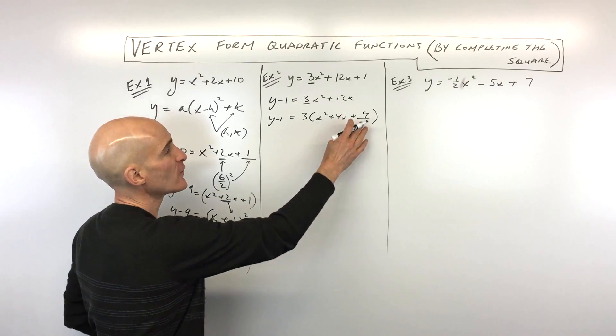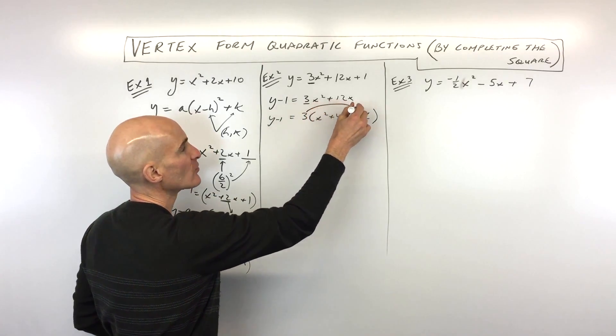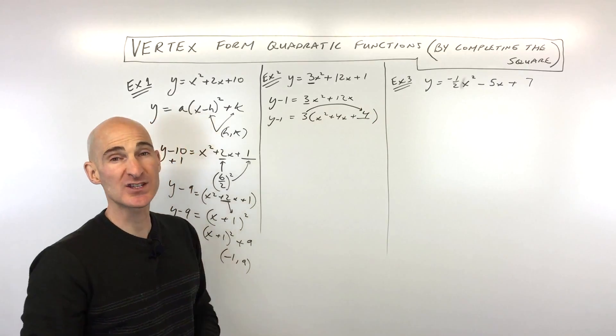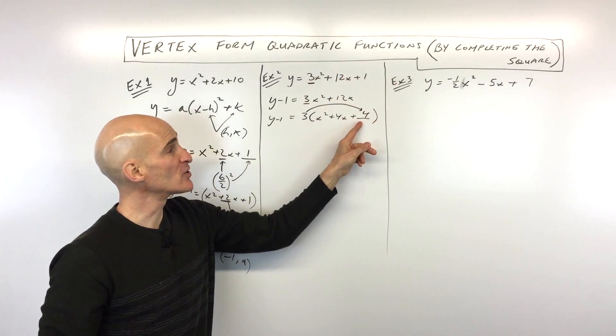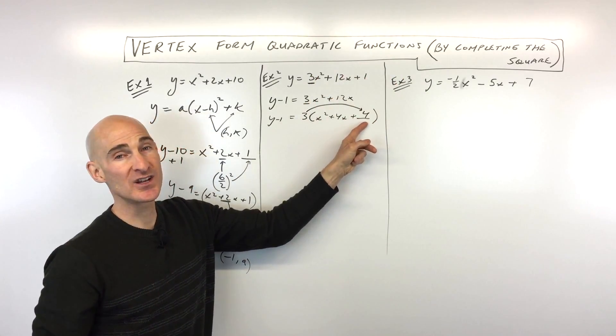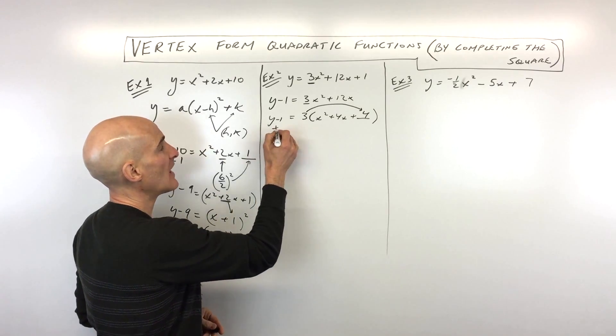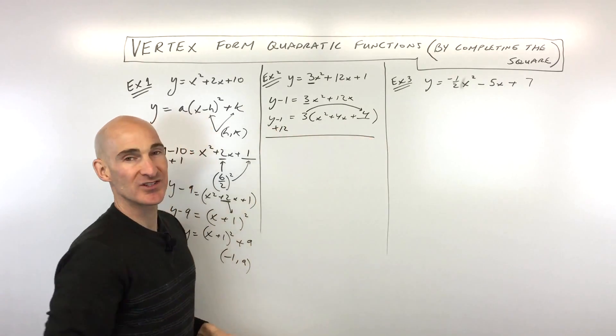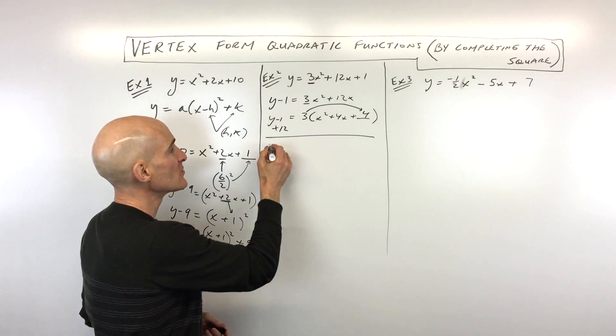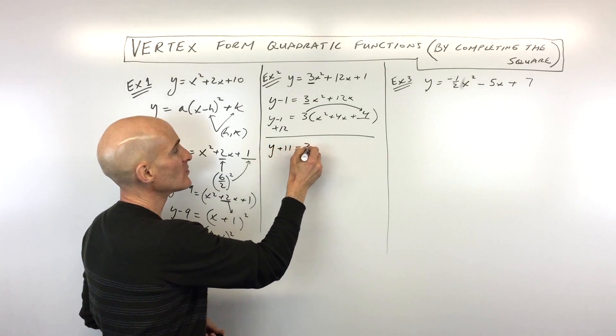Now here's the thing. Because this 4 is in parentheses, we actually have to distribute the 3 times the 4, that's 12. So out of thin air, we're putting 12 on the right side of the equation. So to balance that, we have to add 12 to the left side of the equation. So you want to keep it balanced. So this is y plus 11 equals 3.